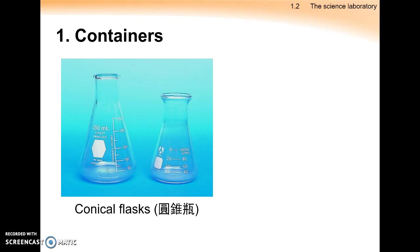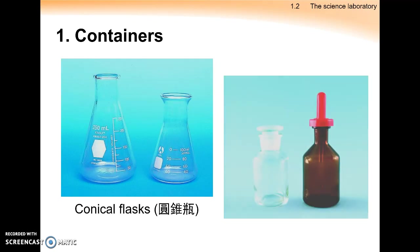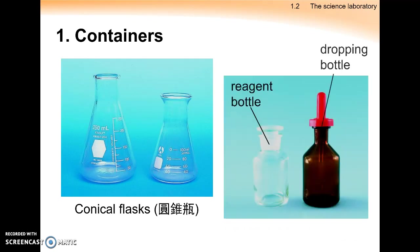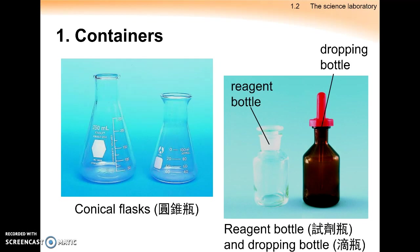If you want to mix something, we may use a conical flask. The shape of the conical flask can prevent liquid from splashing out of the container. For storage of chemicals, we may use a reagent bottle or a dropping bottle.